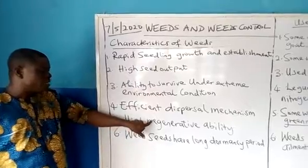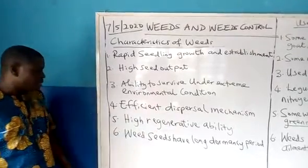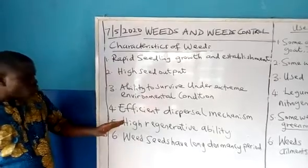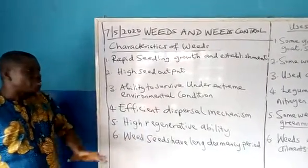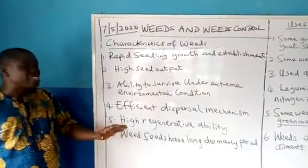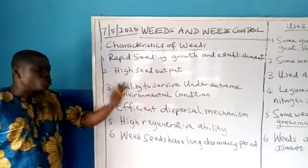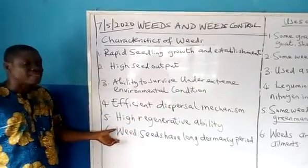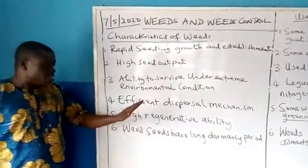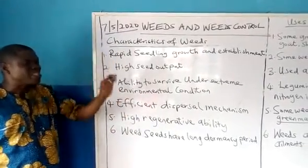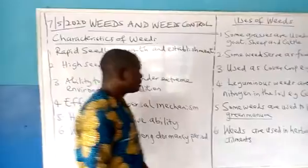Five: high regenerative ability. When you clear or weed your farm, within a short time the weeds will grow back easily and quickly. That means they have a high regenerative ability. Six: weed seeds have a long dormancy period. If conditions are very bad, like in a drought situation where there is no water or rain, the seeds of weeds can survive in that harsh and difficult condition for a long time. When they get just a few drops of moisture they will grow, whereas other crop plants may not survive this long period of dormancy — their seeds may become unviable. The seeds of weeds are viable even when they remain dormant for a long time, unlike the seeds of most crop plants.